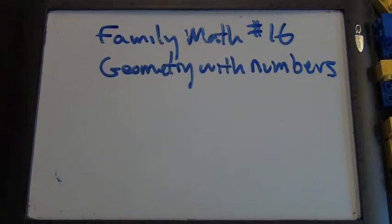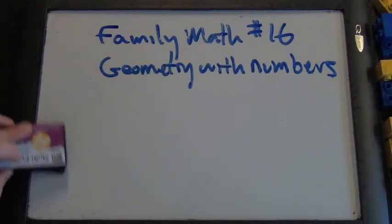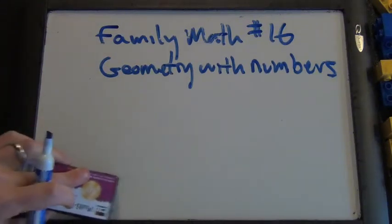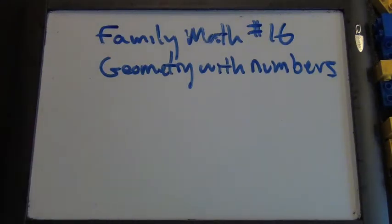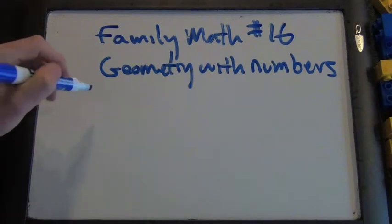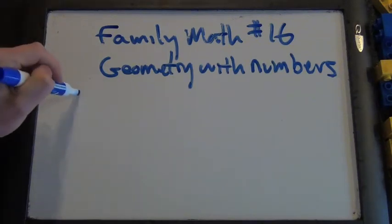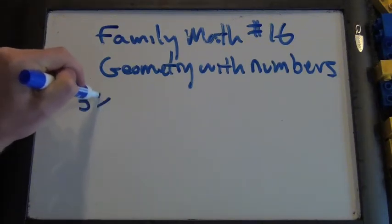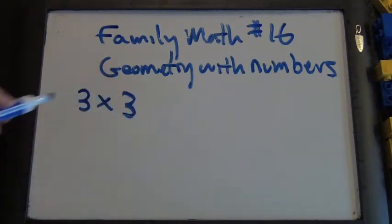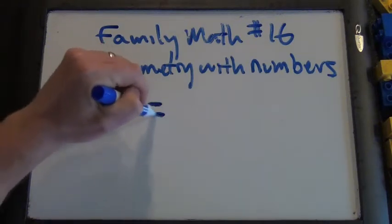So today, all you need to know is just a little bit about multiplication. The first thing we're going to look at today is a geometric way to talk about three times three. And who knows what three times three is? Nine.